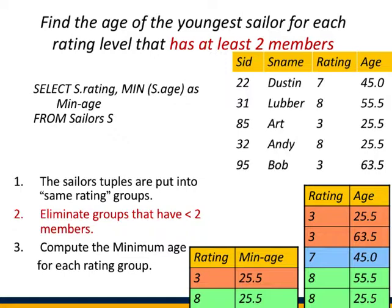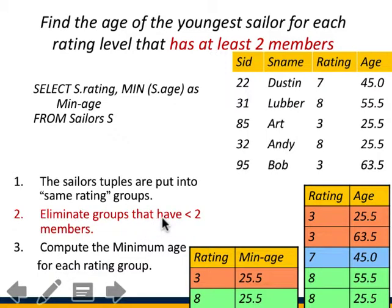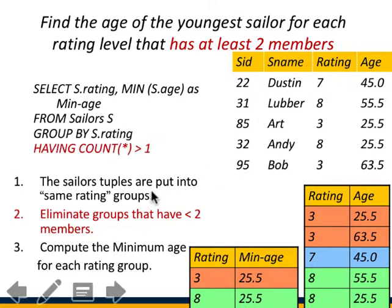Extending the sailors example: find the age of the youngest sailor for each rating level, but only for rating levels that have at least two members. Rating level 745 would be excluded if it has only one member. The query adds GROUP BY rating and HAVING COUNT(*) >= 2. 'At least two' means greater than or equal to two — you can write HAVING COUNT(*) > 1 equivalently.